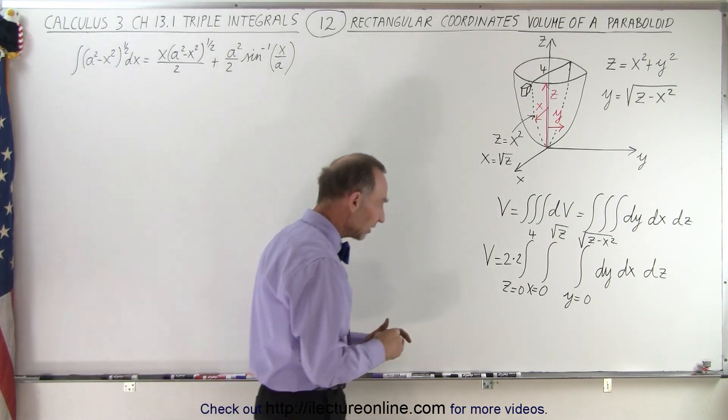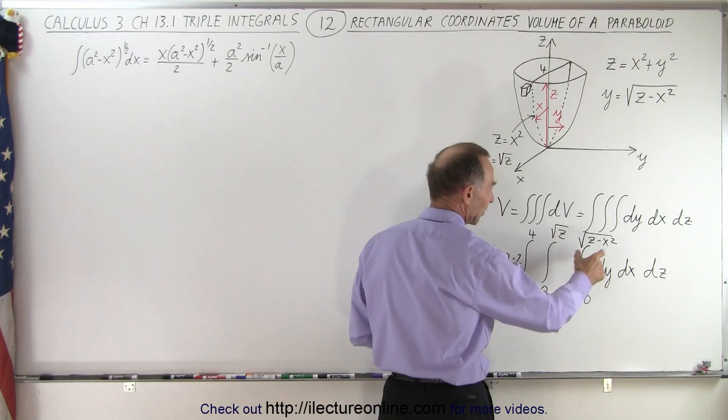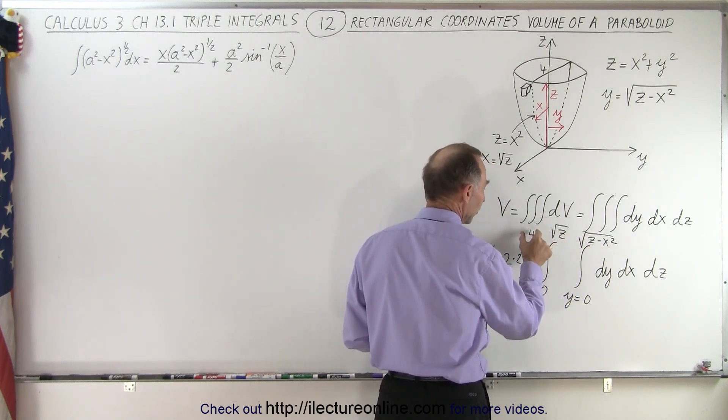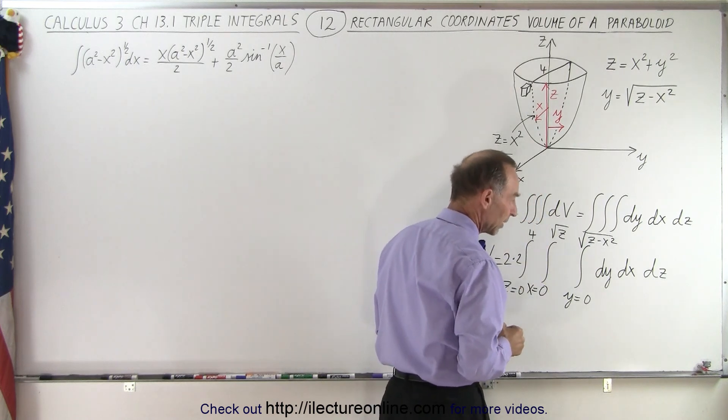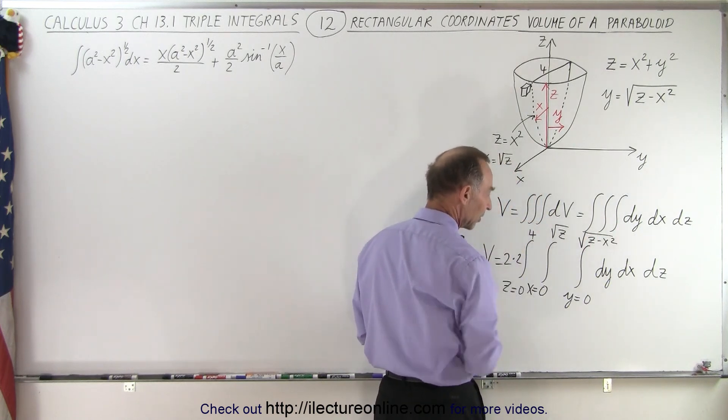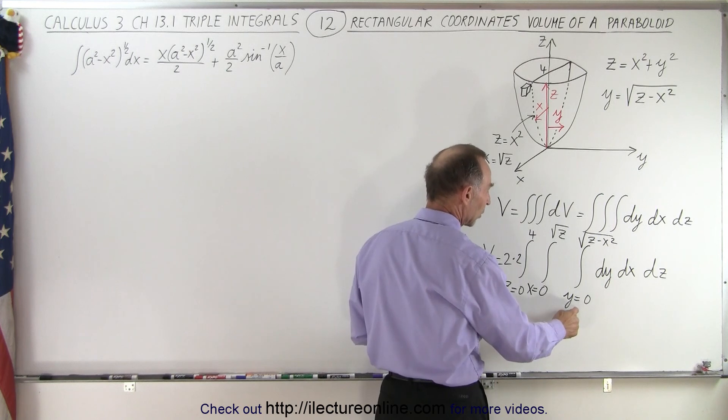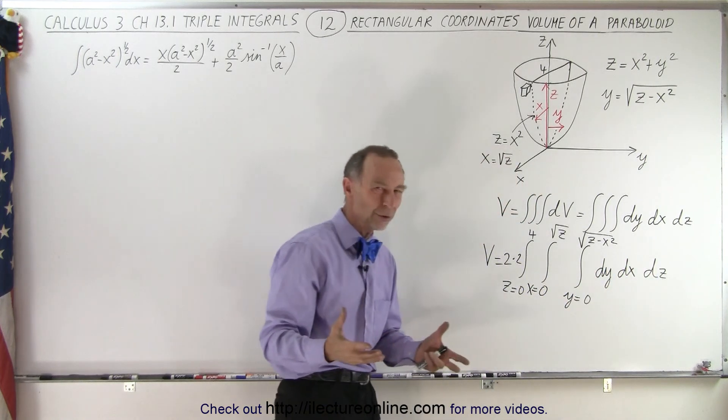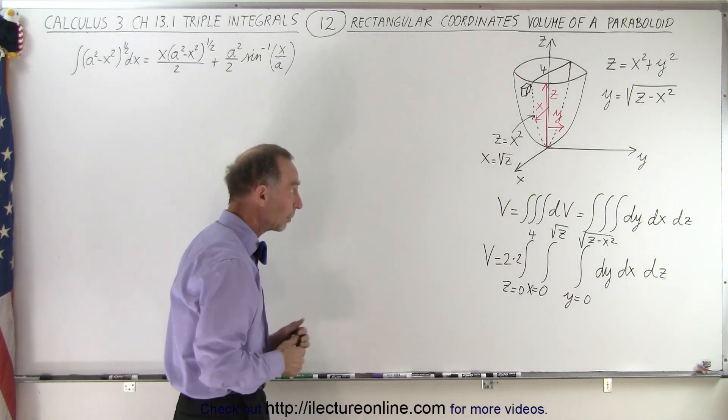So also notice that the limits become simpler. We have here a function of two variables, a function of one variable, and a function of no variable just a constant. You see that typically that always becomes simpler. Here we're integrating over y then we're integrating over x then we're integrating over z, so y first then x then z and that's the best order in this particular case the way the problem is set up.